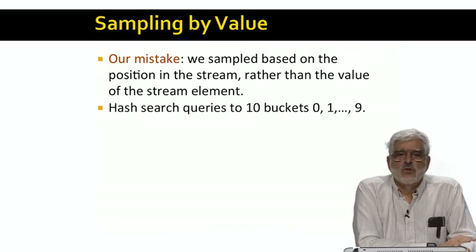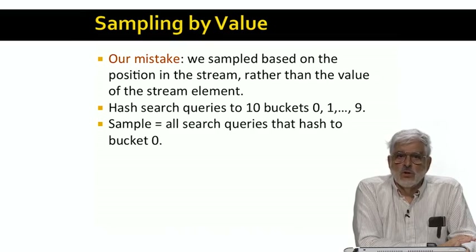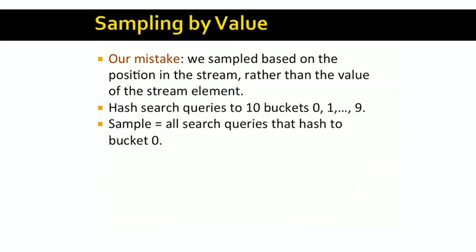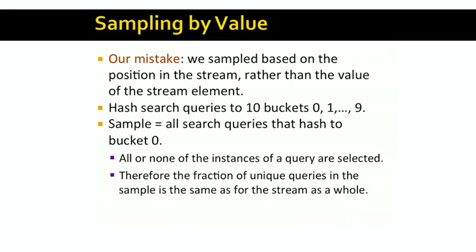Fortunately, there's a much simpler way to get the same effect without storing anything. Let's pick a hash function from search queries to ten buckets, zero through nine. When a search query arrives, hash it. If it goes to bucket zero, then add it to the sample. If it goes to any of the nine other buckets, do not add it to the sample. The cool thing about this approach is that all occurrences of the same query hash to the same bucket because the same hash function is always applied. As a result, we don't need to know whether the search query that just arrived has been seen before, and we don't need to know what action we took. We can be sure that if it did appear before, we'll do the same thing now that we did then. The result is that one-tenth of the queries are selected for the sample, and if selected, the query appears in the sample exactly as many times as it does in the stream as a whole. Thus, the fraction of unique queries in the sample should be exactly as it is for the whole.